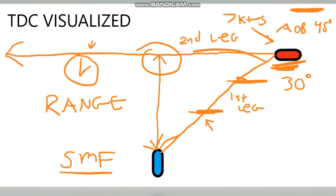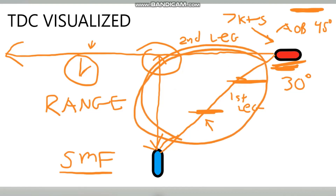Now you can see your TDC is visualized. All you're doing is completing this pyramid — this little triangle. Now that it's complete, we know where to send our torpedo. I hope this helps you guys — let me know how you like the videos.